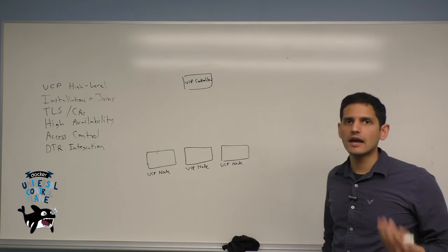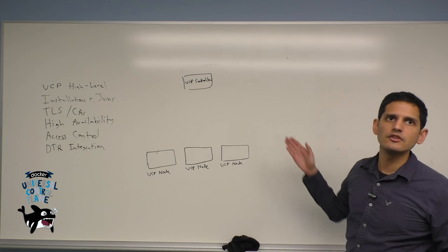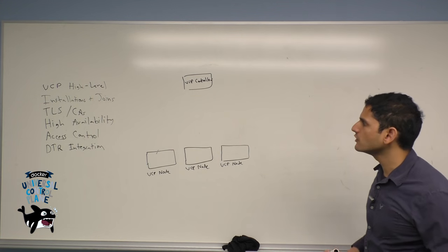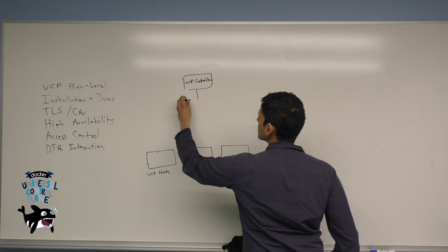all of that in a UCP deployment goes to the UCP controller. The UCP controller stands up its own Swarm cluster, which then manages your nodes. This management is done through a container called the Swarm Manager.